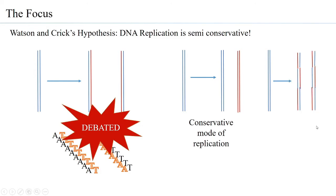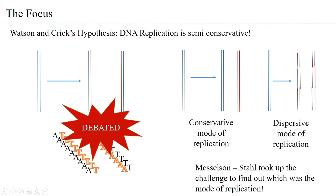Hence, Delbrück proposed that short segments of the DNA may open up and form new DNA. Therefore, after replication, the two strands of DNA would have interspersed parent and daughter segments — not one completely parental strand and one completely daughter strand, but a mix of both in each DNA molecule. This was called the dispersive mode of replication. Meselson and Stahl took up the challenge to find out which was actually the mode of replication.